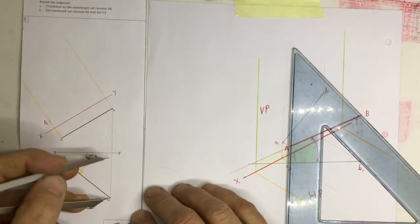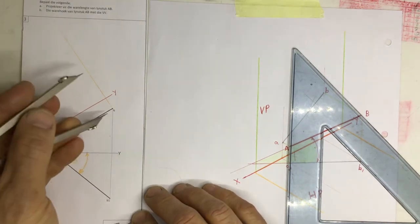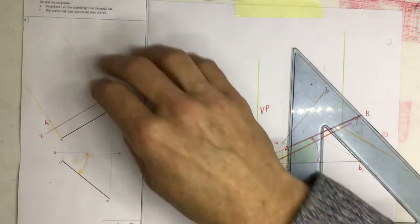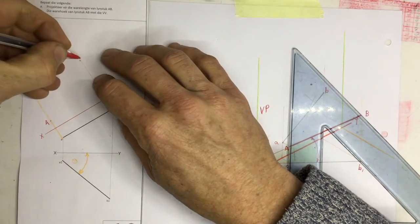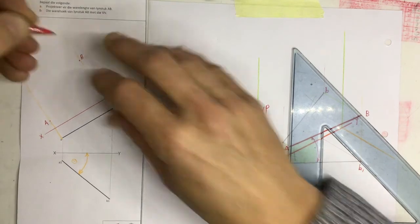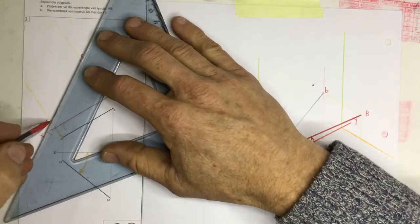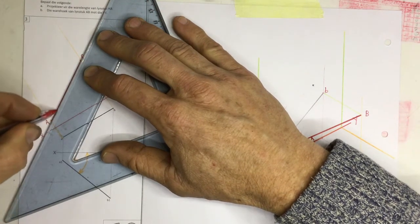And I can take this measurement from the XY axis, find B, go up there, smack that in there. And you can label that as B. And there we go. So I have got my true angle of inclination and my true length.